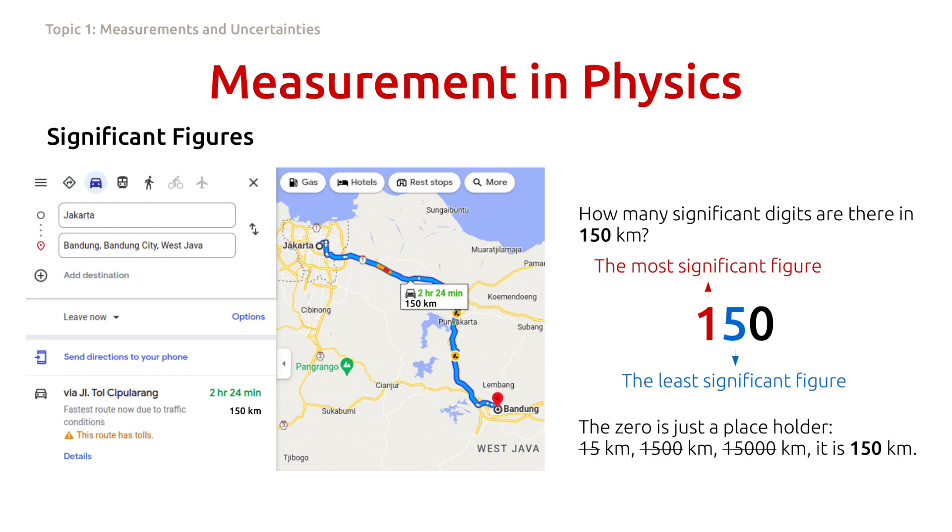What about the zero in the third digit? The zero is just a placeholder that tells us the order of magnitude. Meaning that the distance from Jakarta to Bandung, we know for sure, is not 15 kilometers. It is not 1,500 kilometers, or 15,000 kilometers, right? It is 150 kilometers.